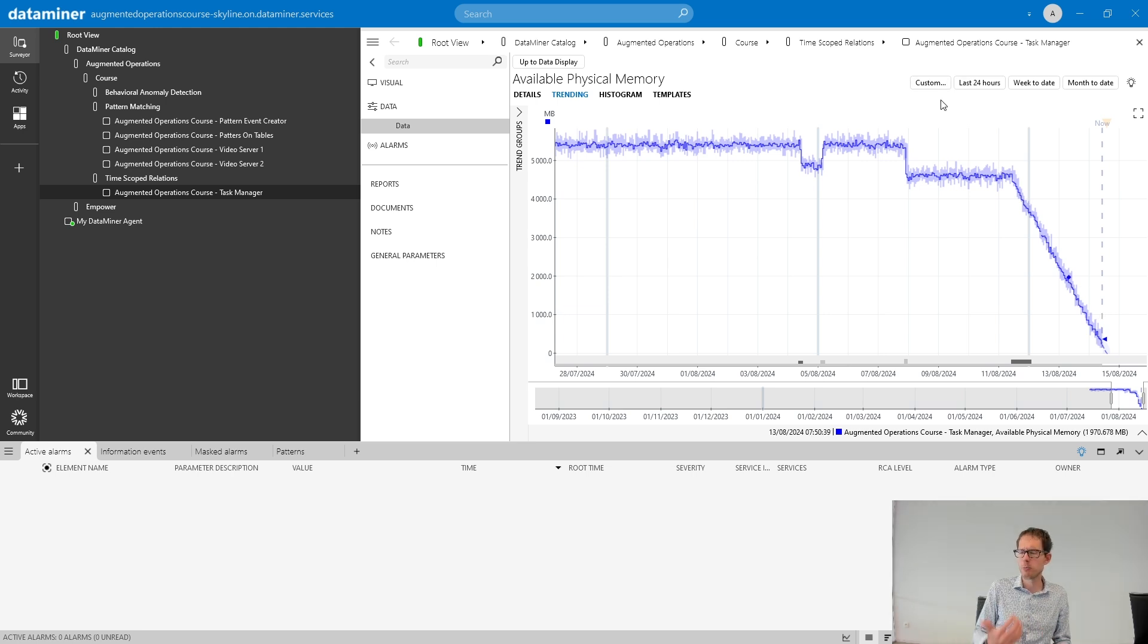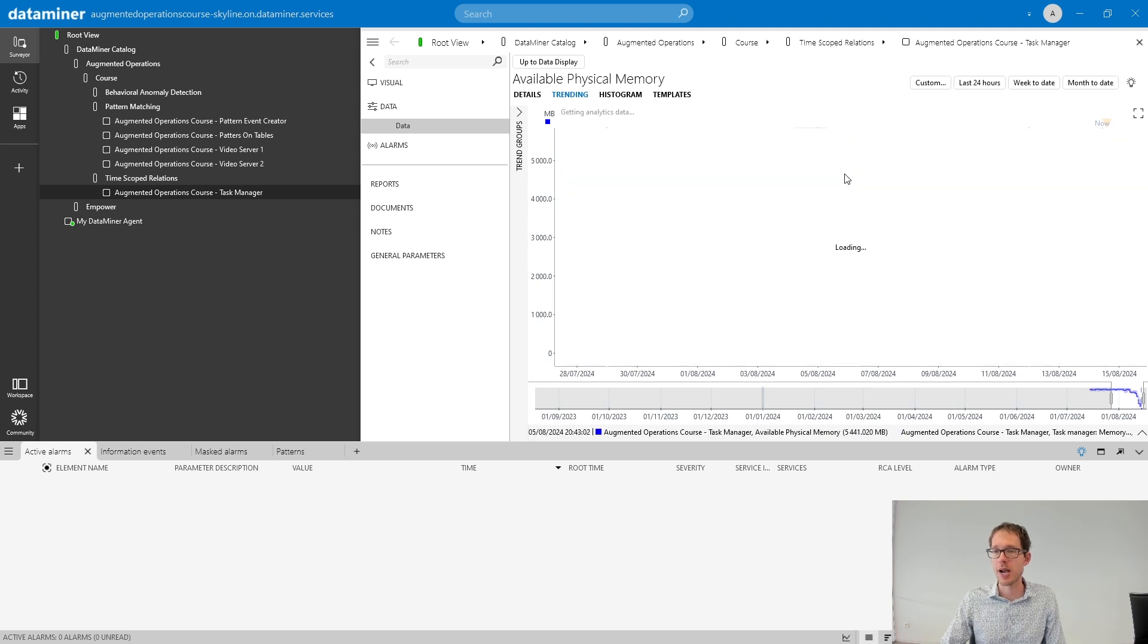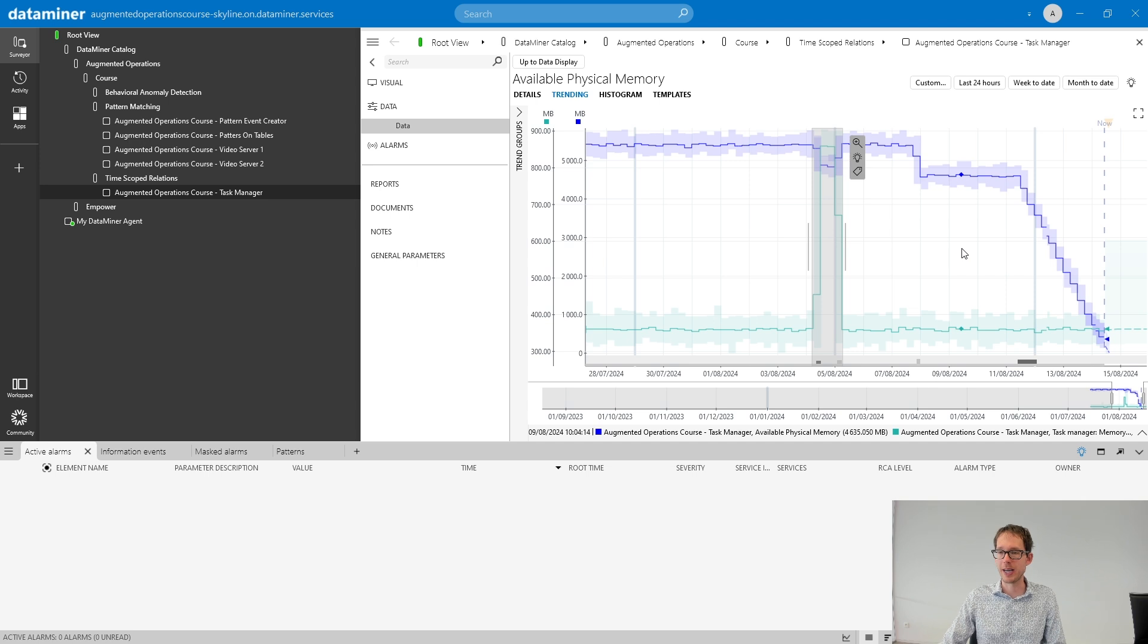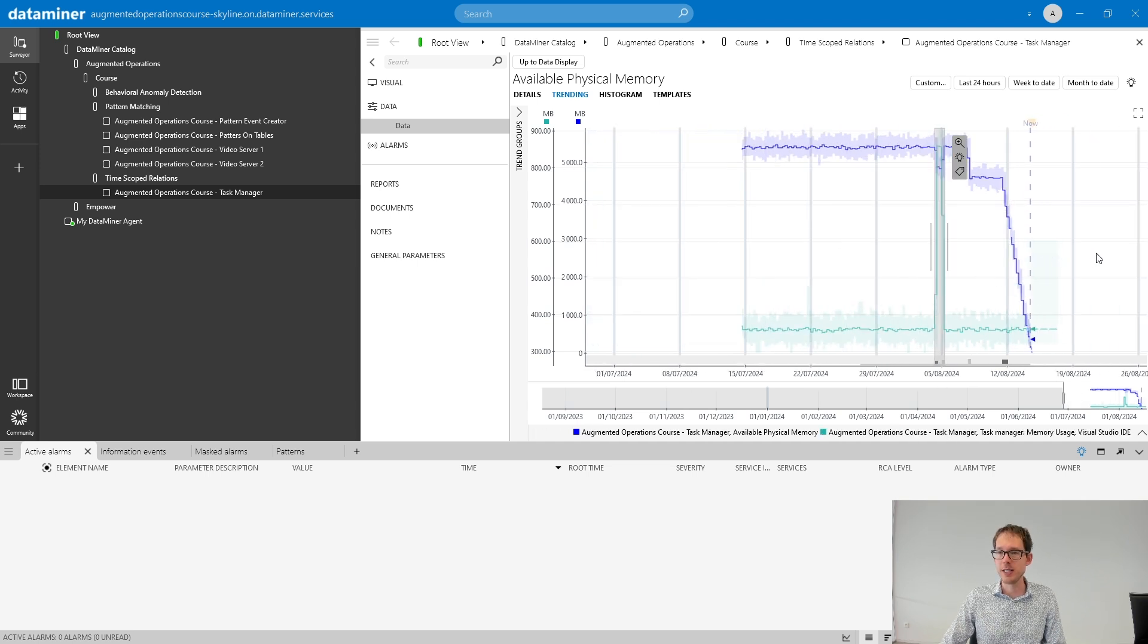We're going to zoom out and you immediately see that there are some weird behaviors in this available physical memory. There was a drop here, but it recovered. Then there was a more permanent drop here. And then there was what seems to be a memory leak here. Now as a user, you probably want to know which process was responsible for this, right? Well, let's check it out. We use time scoped correlation learning. We select this part of the trend graph. We click the light bulb and our time scoped correlation learning algorithm is proposing us to look at the memory usage of the Visual Studio IDE.